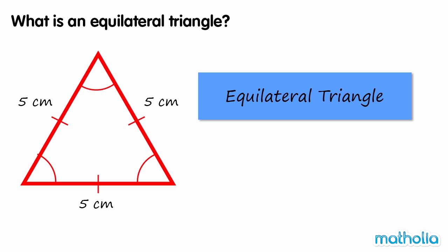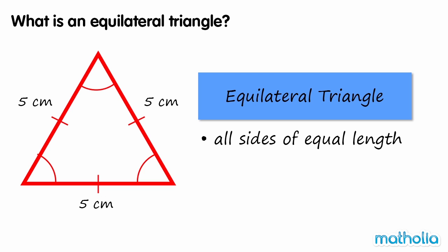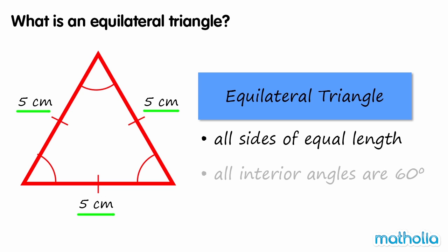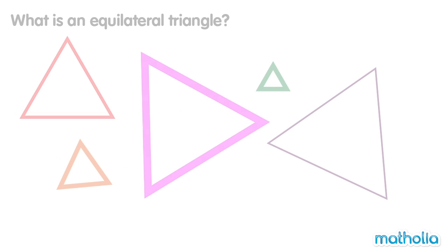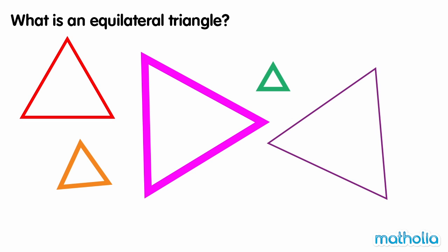What is an equilateral triangle? An equilateral triangle is a triangle where all of the sides are of equal length. All interior angles of an equilateral triangle are 60 degrees. All of these triangles are equilateral triangles.